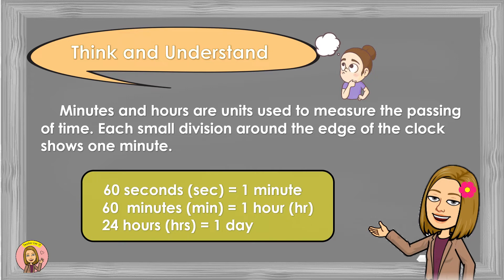Minutes and hours are units used to measure the passing of time. Each small division around the edge of the clock shows one minute. 60 seconds is one minute, and 60 minutes is one hour.